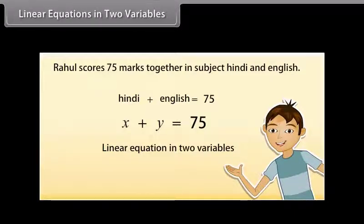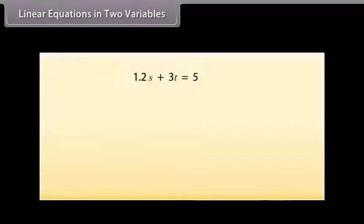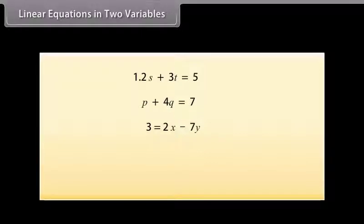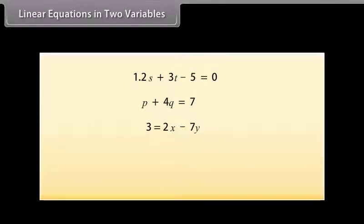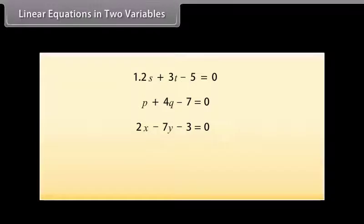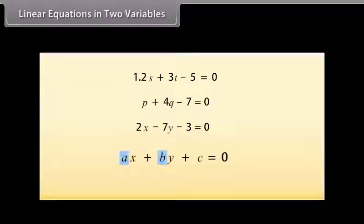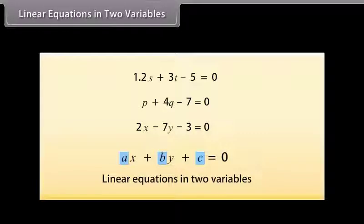Some other examples of linear equations in two variables are: 1.2S plus 3T is equal to 5; P plus 4Q is equal to 7; and 3 is equal to 2X minus 7Y. We can put these equations in the form: 1.2S plus 3T minus 5 is equal to 0; P plus 4Q minus 7 is 0; and 2X minus 7Y minus 3 is 0. So, any equation which can be put in the form AX plus BY plus C is equal to 0, where A, B, and C are real numbers and A and B are not both 0, is called a linear equation in two variables.